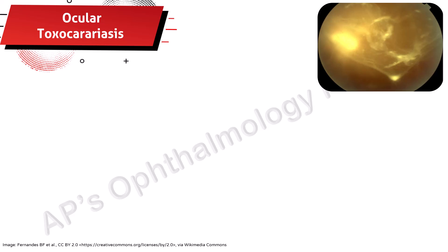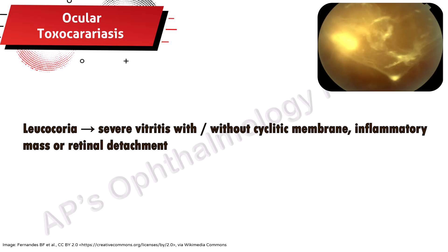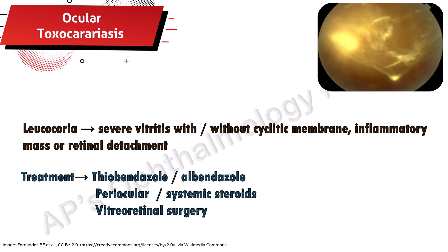Toxocariasis is an infestation caused by either Toxocara canis or cati. Leukochorea occurs due to severe vitritis with or without a cyclitic membrane, inflammatory mass, or retinal detachment. Treatment is with thiabendazole or albendazole, periocular or systemic steroids for the inflammation, and in post-inflammatory complications, vitreoretinal surgery may be required.